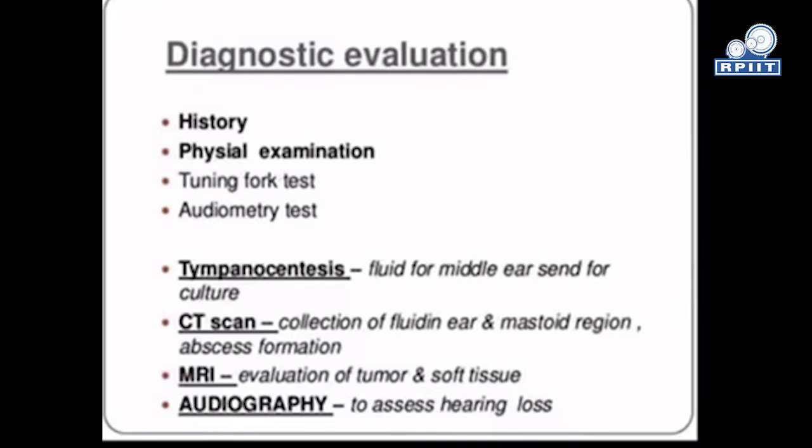Next is the audiometry test. In the audiometry test, a neurological test of auditory brainstem function examines how well hearing functions. It tests both the intensity and tone of sound balance. Next is tympanometry.